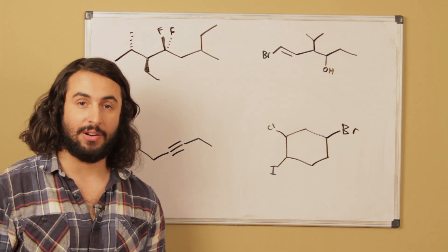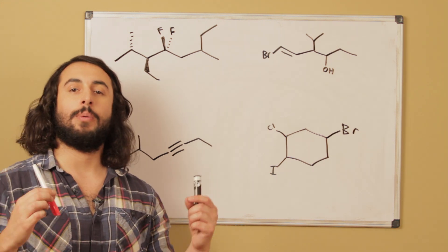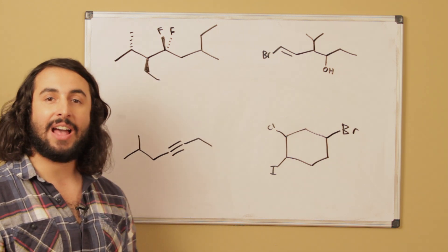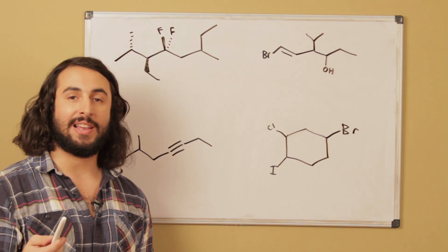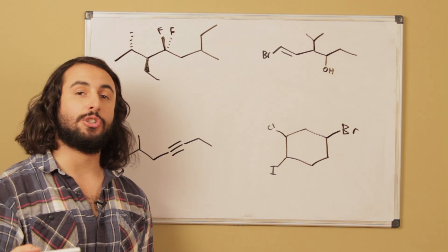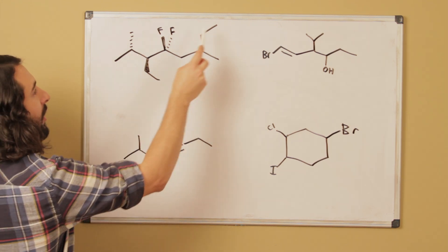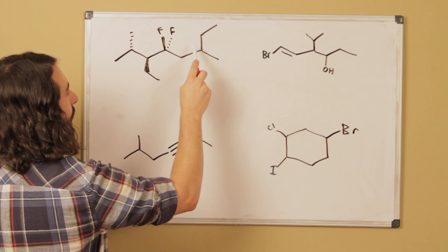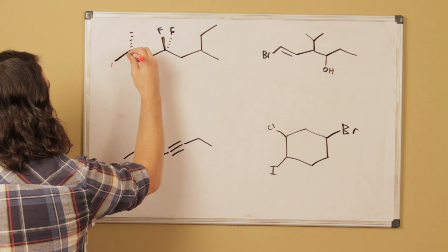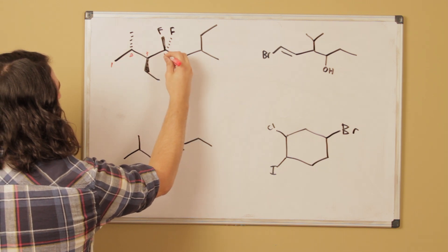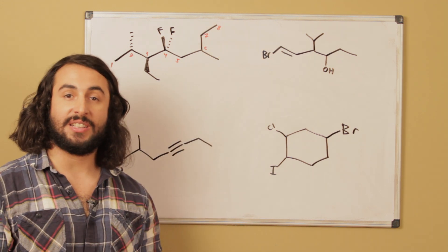The second thing we have to do is number that parent chain. If it's a linear molecule, it's either going to be left to right or right to left. Remember that if all we're dealing with are alkyl and halogen substituents — which all have the same priority — we simply choose the side that has the first substituent occurring sooner. Starting from the left, we have a methyl group on carbon two; starting from the right, it would be on carbon three. So we number left to right: one, two, three, four, five, six, seven, eight.